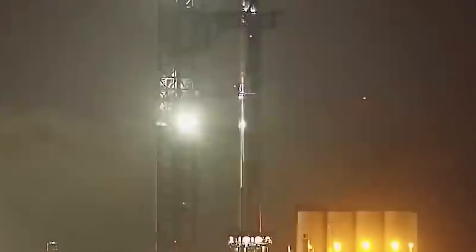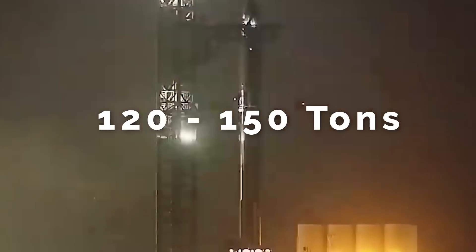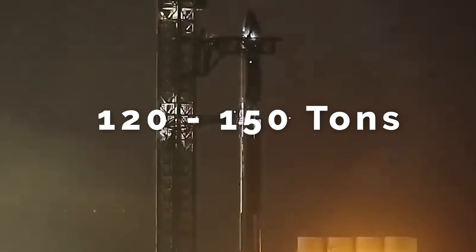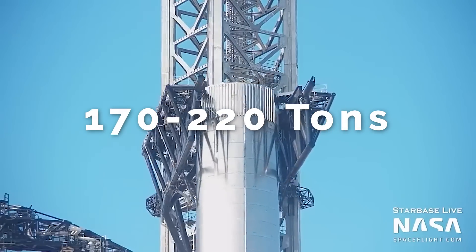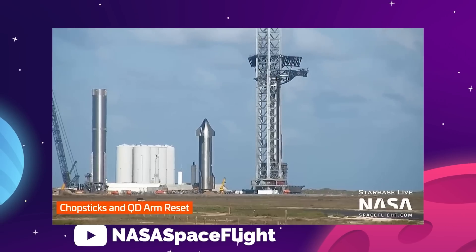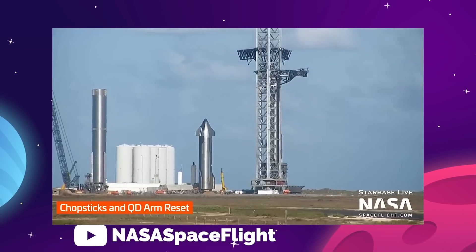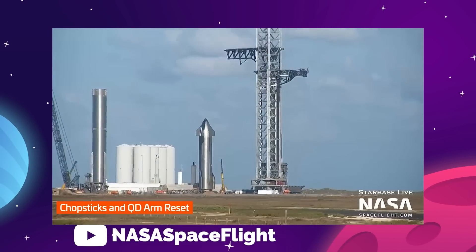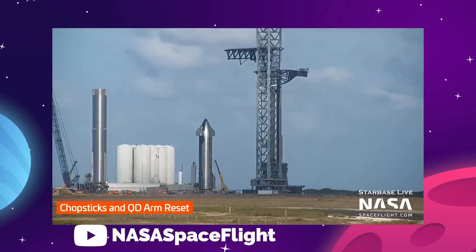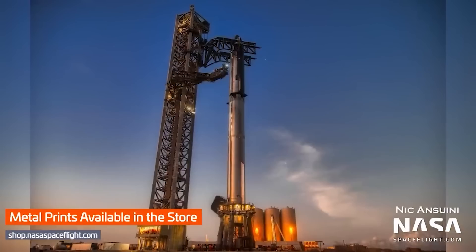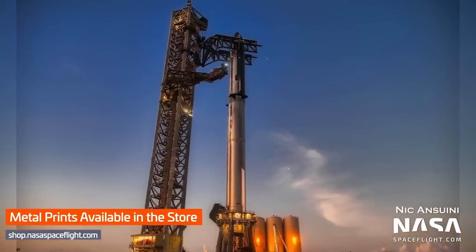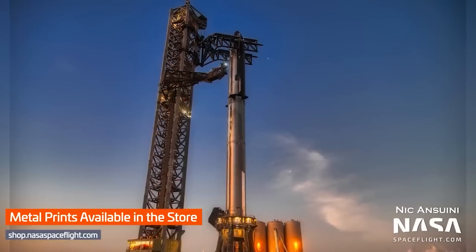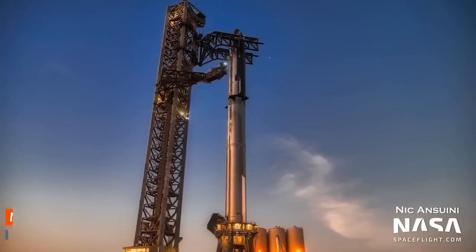Starship has a dry mass of between 120 and 150 tons, while the booster itself has a dry mass of between 170 and 220 tons. So, the SpaceX team were clearly taking the time to get this right, rather than showing off the intended speed of the Mechazilla stacking system. Everything seemed to have gone smoothly, and now the giant 120-meter rocket is standing on the orbital launch mount.